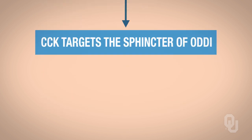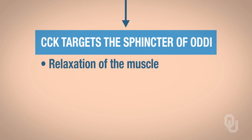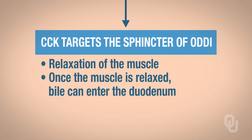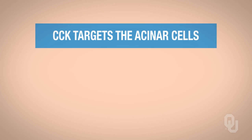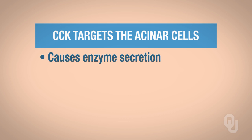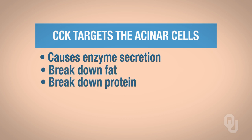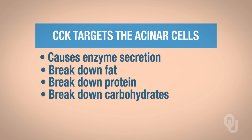CCK is also going to target the sphincter of Oddi, and that's going to cause relaxation of the muscle. If you relax the muscle, then bile can easily enter into the duodenum. The other thing that relaxation allows—going up here to CCK targeting the acinar cells of the pancreas—is enzyme secretion, so synthesis and secretion of your enzymes. Those enzymes break down fat, protein, carbs, and nucleic acids.